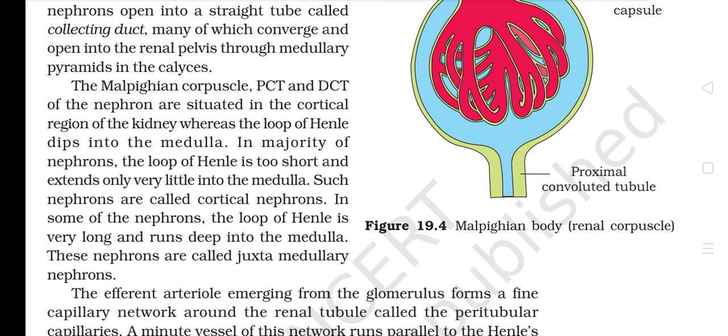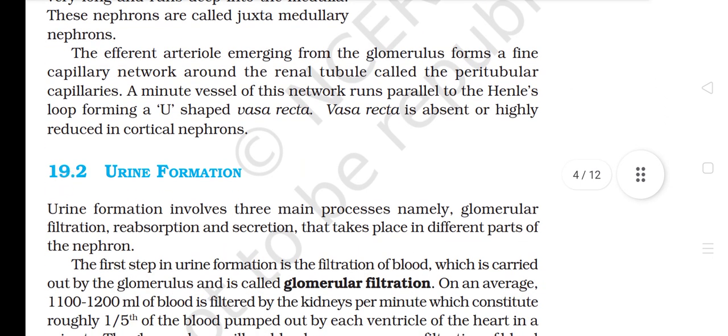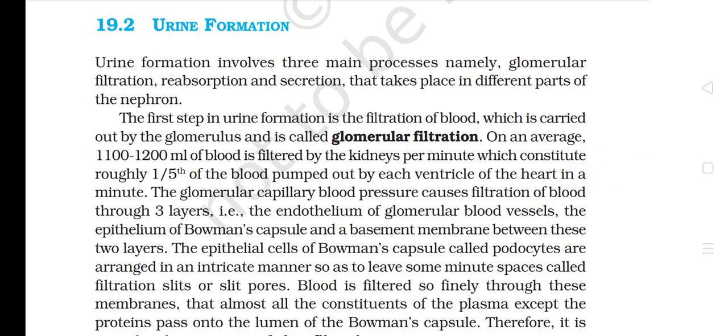The Malpighian corpuscle, PCT, and DCT of the nephron are situated in the cortical region of the kidney, whereas the loop of Henle dips into the medulla. In the majority of nephrons, the loop of Henle is short and extends only a little into the medulla — these are called cortical nephrons. In some nephrons the loop of Henle is very long and runs deep into the medulla — these are called juxtamedullary nephrons. The efferent arteriole forms a fine capillary network called peritubular capillaries around the renal tubule. A minute vessel running parallel to Henle's loop forms a U-shaped vasa recta, which is absent or reduced in cortical nephrons.